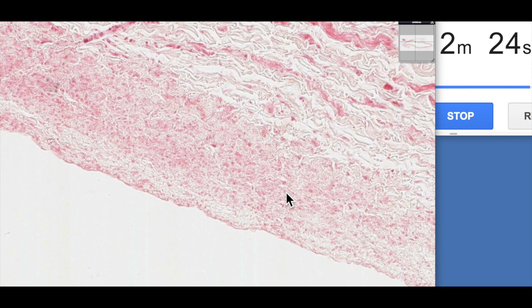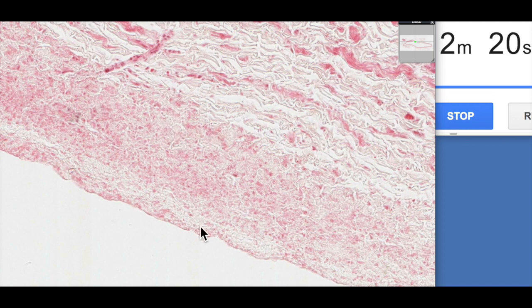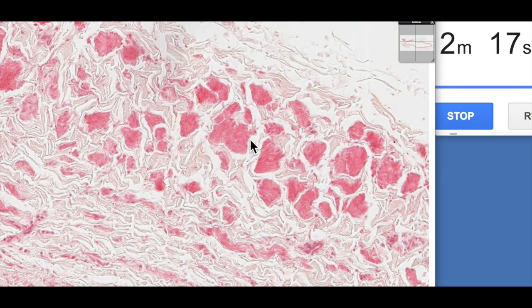It's sort of this randomly dispersed smooth muscle amongst connective tissue and then if we go to outside here, this is in the tunica adventitia, we've got these thick bundles of smooth muscle which is really different.